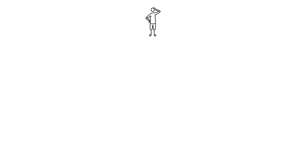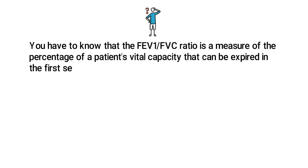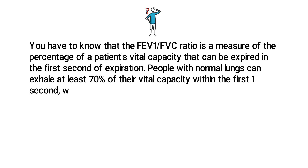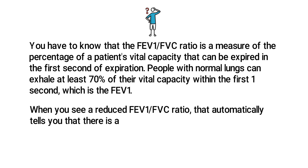To get this one right, you have to know that the FEV1 to FVC ratio is a measure of the percentage of a patient's vital capacity that can be expired in the first second of expiration. People with normal lungs can exhale at least 70% of their vital capacity within the first one second, which is the FEV1. When you see a reduced FEV1 to FVC ratio, that automatically tells you that there's an obstructive disease.